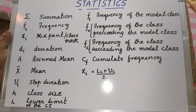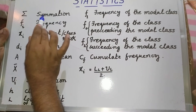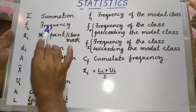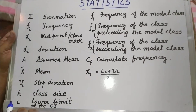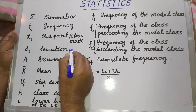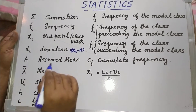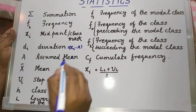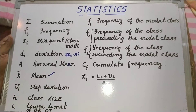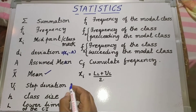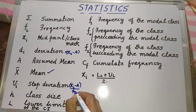For a quick recap: sigma stands for adding up or summation. Fi is the frequency. Xi is the midpoint or class mark. Di is the deviation, given by xi minus A, where A is the assumed mean chosen from among the midpoints. X bar means mean. Ui is the step deviation, equal to xi minus A divided by H.